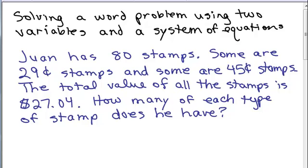Juan has 80 stamps. Some are 29-cent stamps and some are 45-cent stamps. The total value of all the stamps is $27.04. How many of each type of stamp does he have?